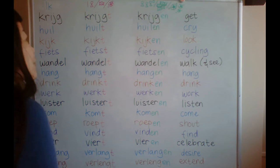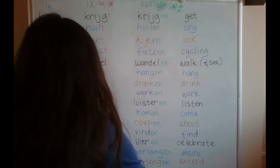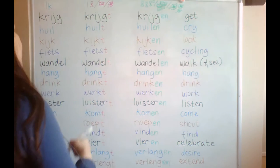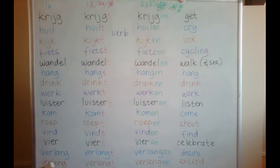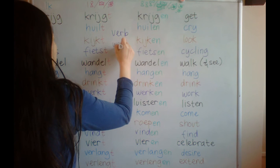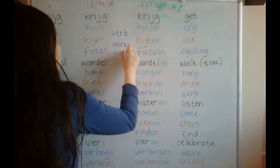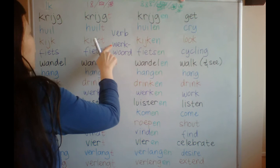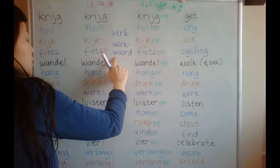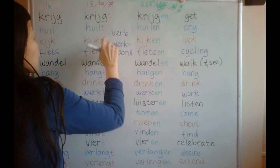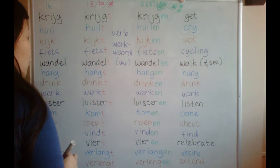Hi! Today we will learn Dutch language, or Nederlands, about the verb. In Dutch, verb is 'werkwoord' — sometimes written as 'ww'.